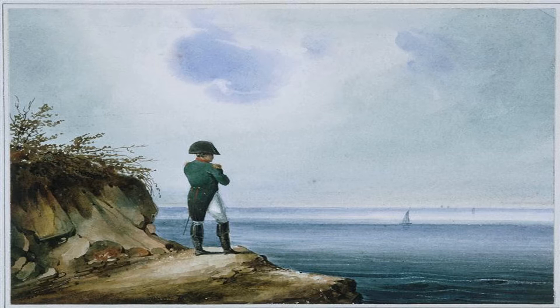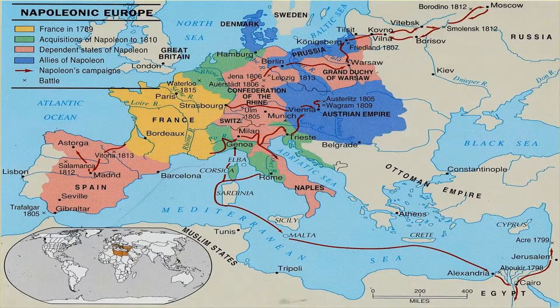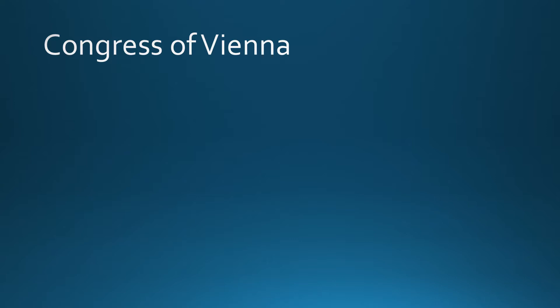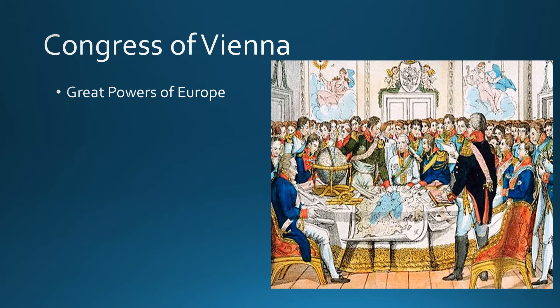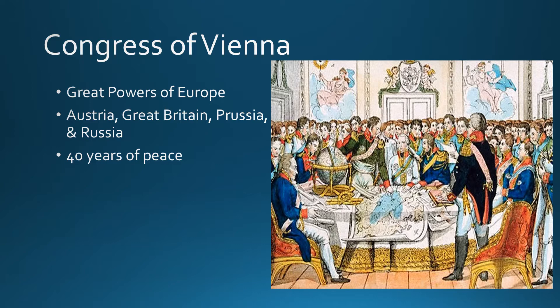After Napoleon is gone, the great powers of Europe come together — Austria, Great Britain, Prussia, and Russia. The other great power is France, which isn't really attending. These great powers want to determine the future of France and more so the future of Europe. The Congress of Vienna leads to 40 years of peace in Europe, and after what they do there will not be another war for about 40 years. They achieve their aims through diplomacy — not going to war or using troops, but sitting down and figuring out how to make this work.